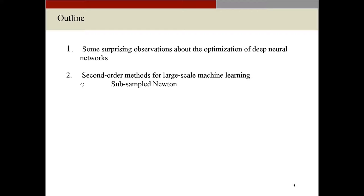We have a project related to the first part of this talk, which is optimization methods for deep neural networks. In that particular case, they're interested in what is the most appropriate future architecture for doing deep neural networks that would go beyond GPUs, which are currently used very extensively. I'm going to talk about two parts: first, surprising observations about optimization of deep neural networks; second, how you can solve big data problems using second order methods.